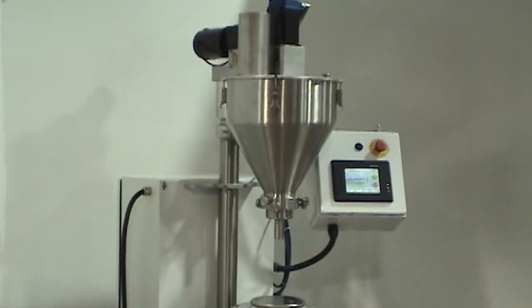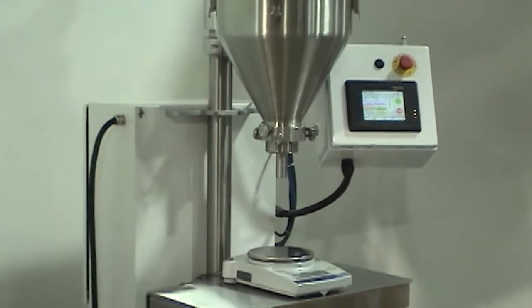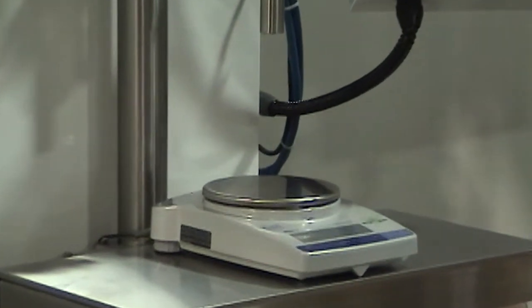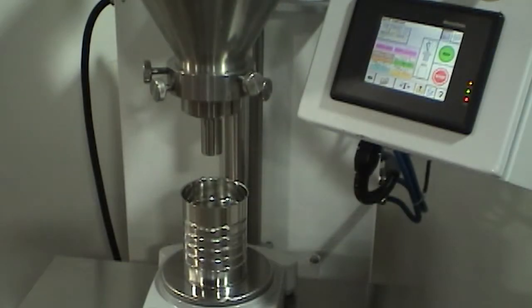The system incorporates a scale to provide actual weight feedback to the filler and uses two fills per container. The first user programmable fill typically dispenses 90-95% of the target fill weight, and the second top-off fill is based on the actual calculated product density of the first fill.